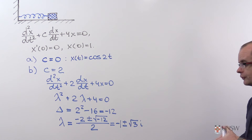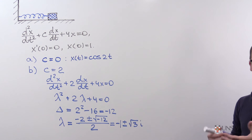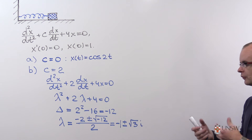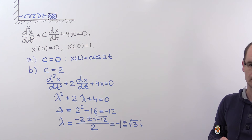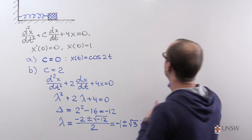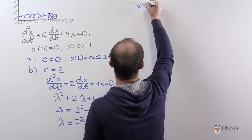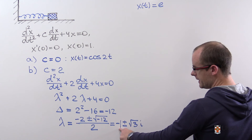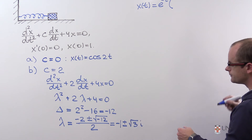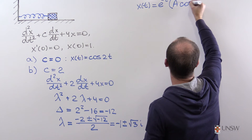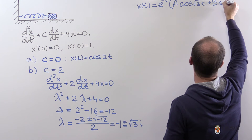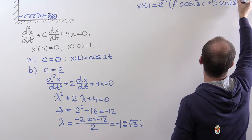The roots are complex conjugates. To write down the general solution we use a linear combination of sine and cosine, and since there is a real part we multiply by an exponential term. The solution is x equals e to the power negative t times the quantity a cosine of root 3 times t plus b sine of root 3 times t.